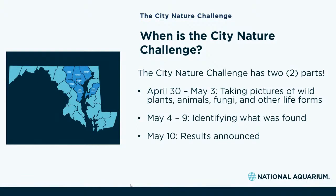May 4th through 9th — next week — you can help identify the species that were observed. Then on May 10th the City Nature Challenge results are announced. In 2019, Baltimore placed 35th in observations, 31st in species identified and observed, and 23rd in participants — which is not too shabby, especially for the second year we were in the competition. I think this year we can do a little bit better, especially because we've got such a much larger group, but also because we've got all of you here today learning more about this.